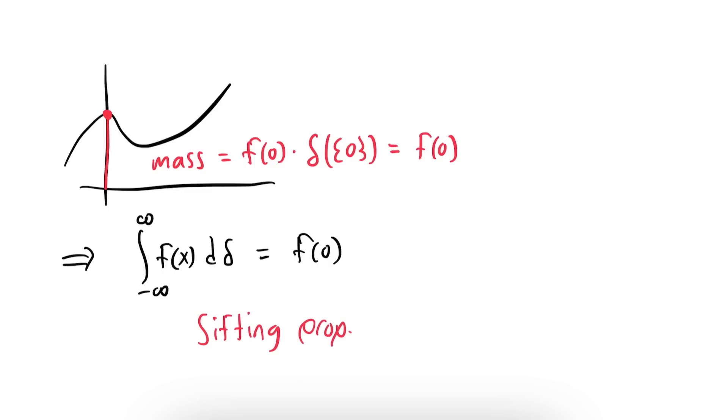Now, in the special case when μ is the Dirac measure δ, notice that the region under the curve has 0 mass anywhere except the origin. So the total mass is the height of the function at 0 times the Dirac measure of {0}, which is just f(0). So this is a pretty important fact. We've shown that integrating with respect to the Dirac measure does the same thing as the Dirac delta, namely, it extracts the function's value at 0.